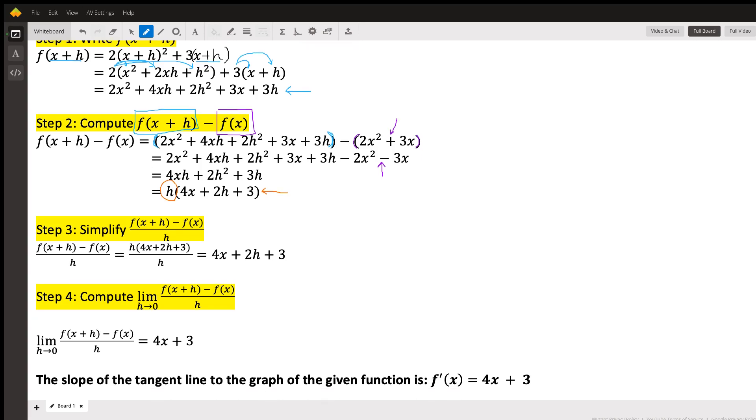All right, so step three. In step three, what we're going to do is we're going to take the quotient, that's the dividing of what we found in step two divided by h. So f(x + h) - f(x) all over h equals, and notice that because we already factored out the h, it's really easy for us to see that the h is going to cancel out in the numerator and denominator. So all we're left with is 4x + 2h + 3.